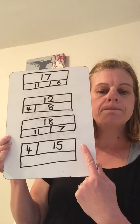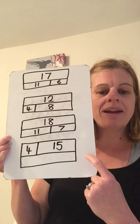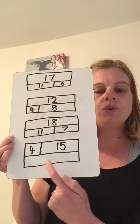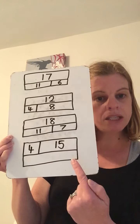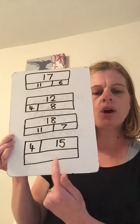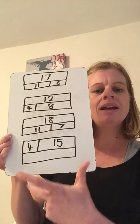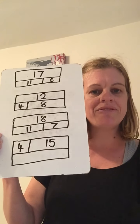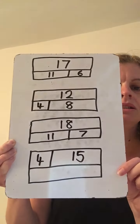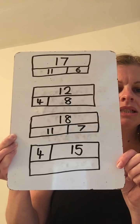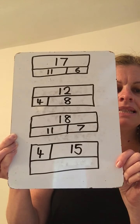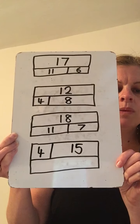Now, here is a challenge. I want you to write the fact families for this bar model, but I have not put the whole in. So you have to first of all work out what the whole is. Here are your parts — what is the whole? Then write your fact families for that bar model. OK, so I'm going to leave it here. You can pause it, and on your whiteboard or paper or whatever you've got, write the fact families for these bar models.